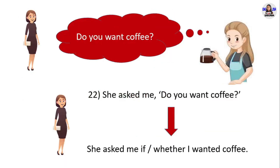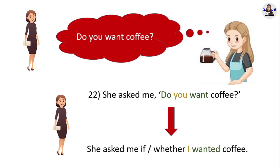Next example: 'Do you want coffee?' She asked me 'Do you want coffee?' in direct speech. In reported speech, she asked me whether I wanted coffee. This question is a yes/no question — always remember 'if' or 'whether' can be used, but only one of them. 'Do want' in present simple changes into 'wanted' in past simple. Pronoun 'you' changes into pronoun 'I.'